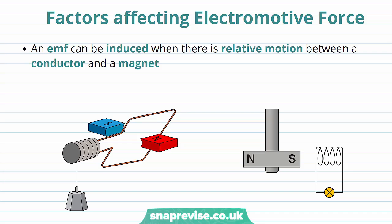We are now going to look at some of the factors that affect electromotive force. We know that an EMF can be induced when there is relative motion between a conductor and a magnet. Either the magnet can be stationary, like in the case of a coil rotating between two magnets, or it can be rotating, like in the case of a dynamo. In both cases, there must be some relative motion.